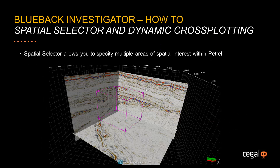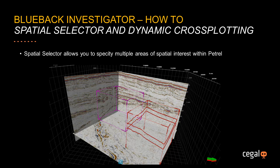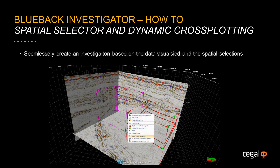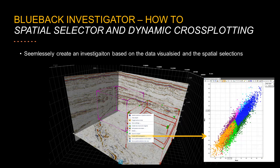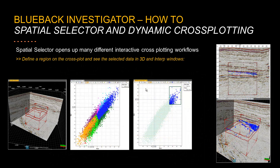Spatial Selector allows you to specify multiple areas of spatial interest within PATREL, then from any spatial selection, seamlessly create a Blueback Investigation based on the visible data and spatial definition. Spatial Selector opens up lots of interactive cross-plotting workflows — for example, the ability to define an area of seismic interest, create a seismic cross-plot directly from the spatial selection, select data points of interest, then visualise the data points in native PATREL windows.